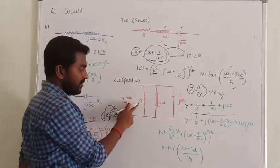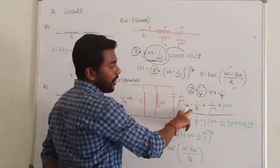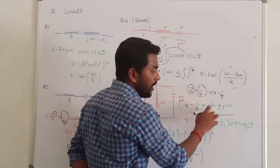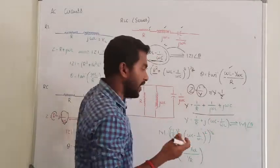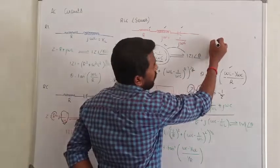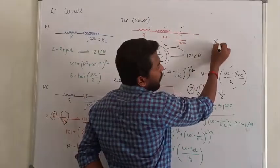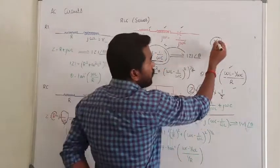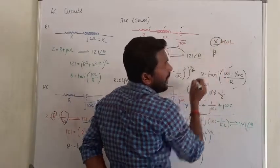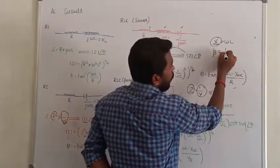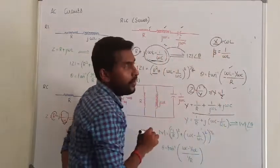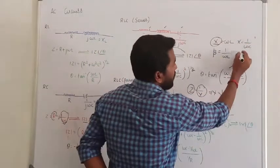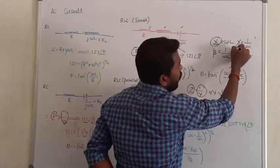The impedance R has a reciprocal conductance 1/R. The impedance jωL has a reciprocal susceptance. In series circuits, reactance is represented using X; in parallel circuits, susceptance is represented using B. So X_L equals ωL, and susceptance B_L equals 1/ωL. For the capacitor, reactance X_C equals 1/ωC, and susceptance B_C equals ωC. These are reciprocal to each other.